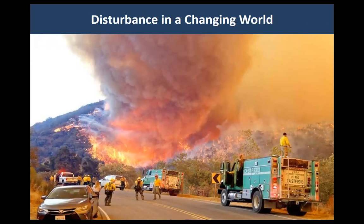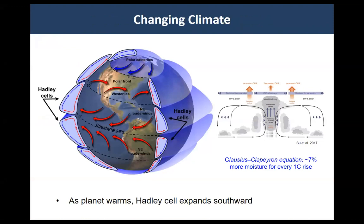This is the kind of event we should be preparing for in the future because of changes in the baseline biophysical template on Earth. One of the main changes happening is that with warming temperatures — first-principle physics — for every one degree Celsius rise, we get 7% more moisture in terms of the main convective currents associated with the Hadley cells.